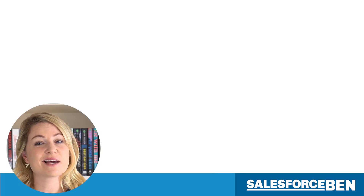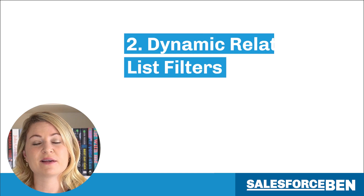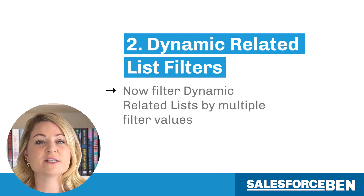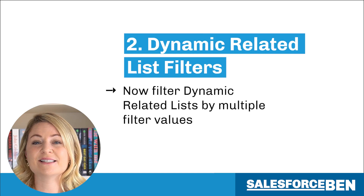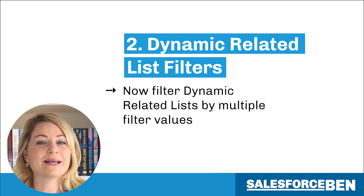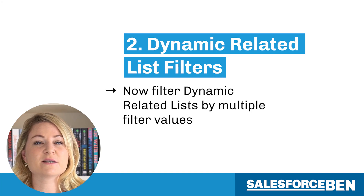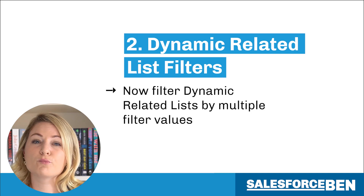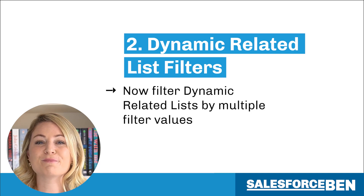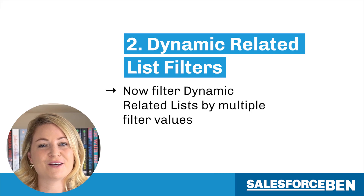Next, and sticking with the dynamic theme, there is a small but significant update to dynamic related list filters. You can now filter a dynamic related list by multiple filter values. Previously, you could only filter by a single value.